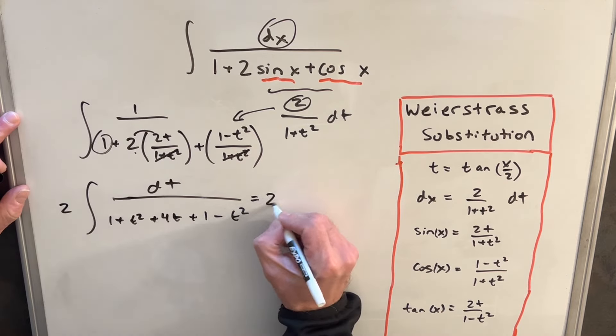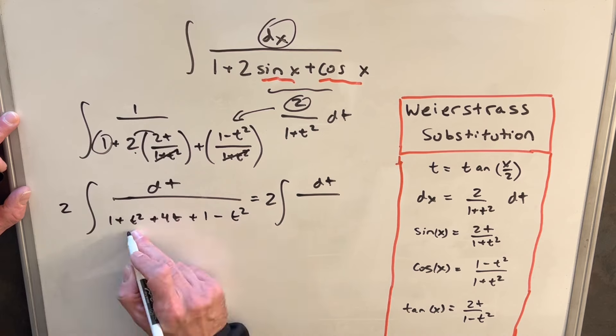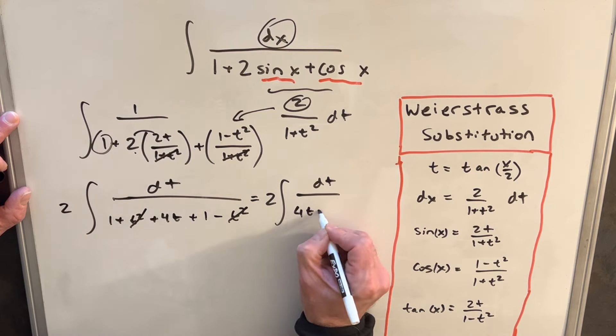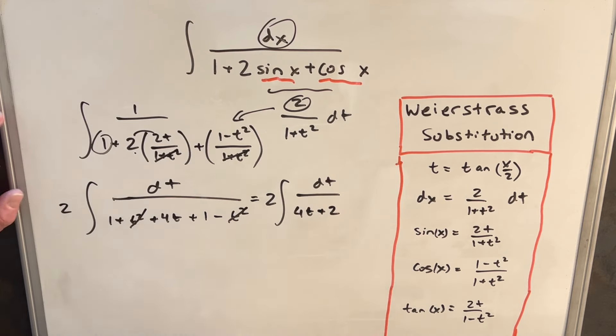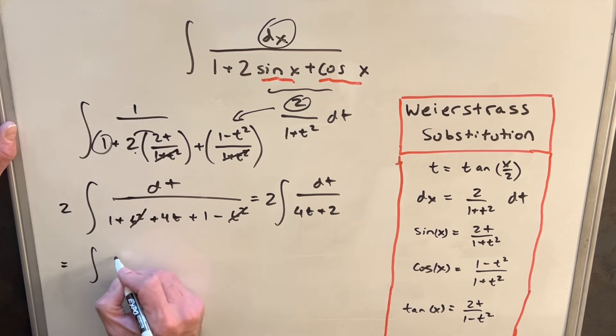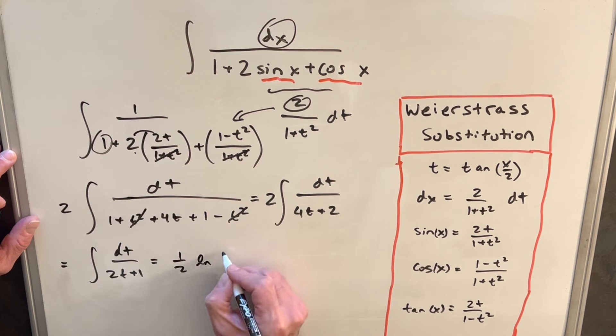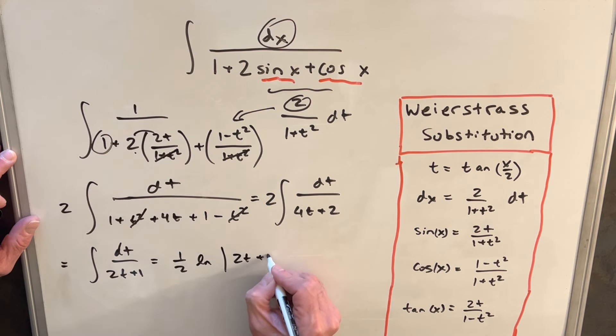Okay, then next we'll just do a little additional simplification here. So our t squares, we have a t squared minus t squared, so that's going to cancel. We're just going to be left with 4t plus 2. And then since we have a 2 out front there and we can pull a 2 out of our denominator, just to simplify it all the way, we're going to end up with dt over 2t plus 1. And that's a really easy integral. That's just going to be 1 half ln absolute value 2t plus 1 plus c.